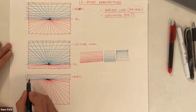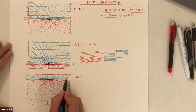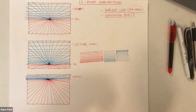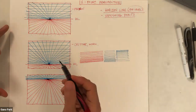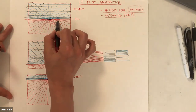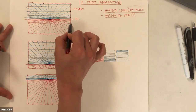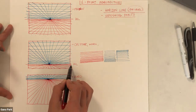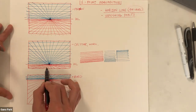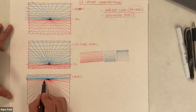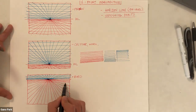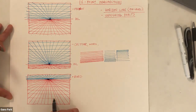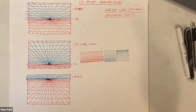This kind of reminds me of the opening credits for Star Wars — things getting smaller and receding into space. Now I'll do the same thing for the red grid. Once we finish this, we'll start creating compositions and putting objects in here to create perspective. Practicing these grids in your sketchbook when you're bored is a great way to internalize how to draw depth.